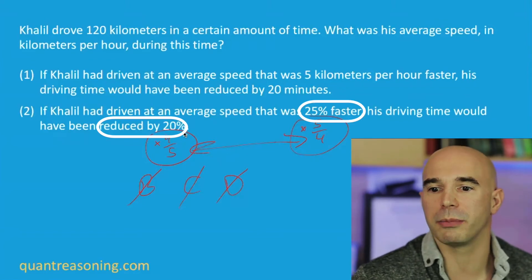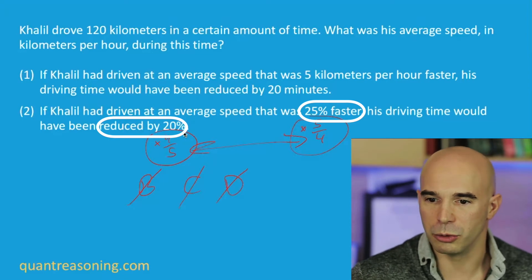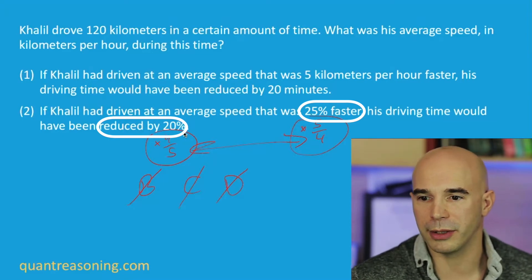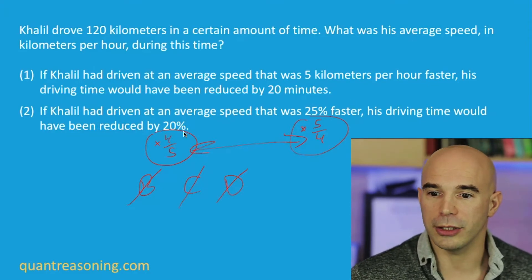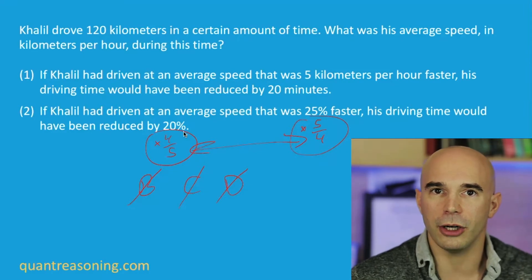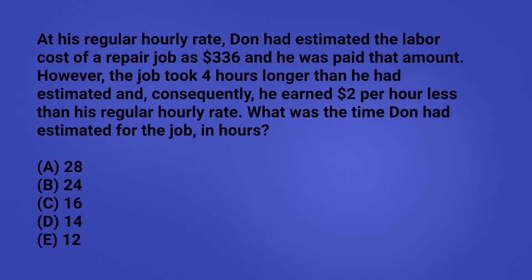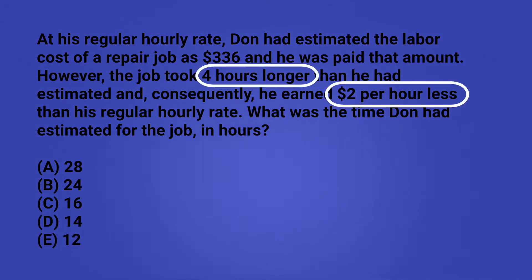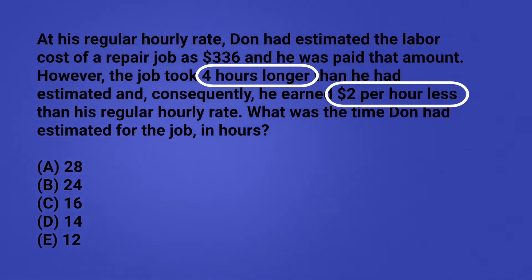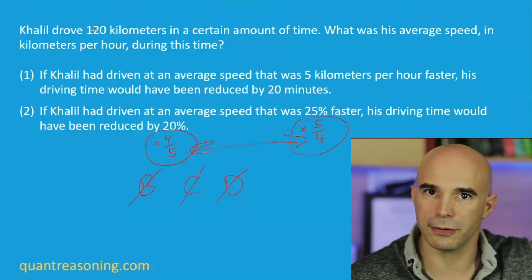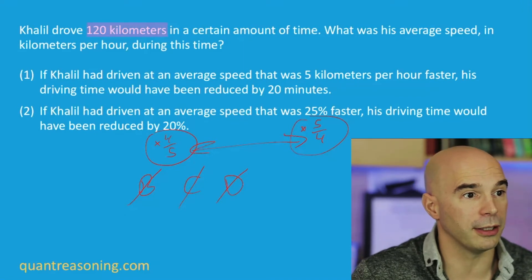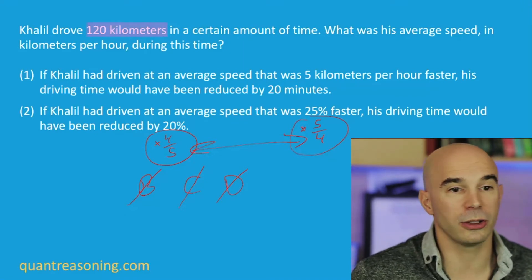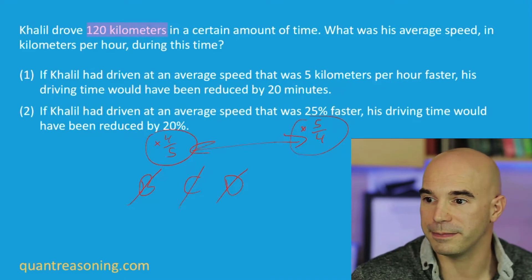We're multiplying the speed by such and such, we're multiplying the time by such and such. But in all of those other cases, the changes were additive — addition and subtraction to the factors. So in the case of Don and his hourly rate multiplied by number of hours equals total income: if the hourly rate goes up, then the number of hours goes down to keep the product the same. Same goes for the towels question — the product was $120 total for towels, and it's 120 kilometers total here.